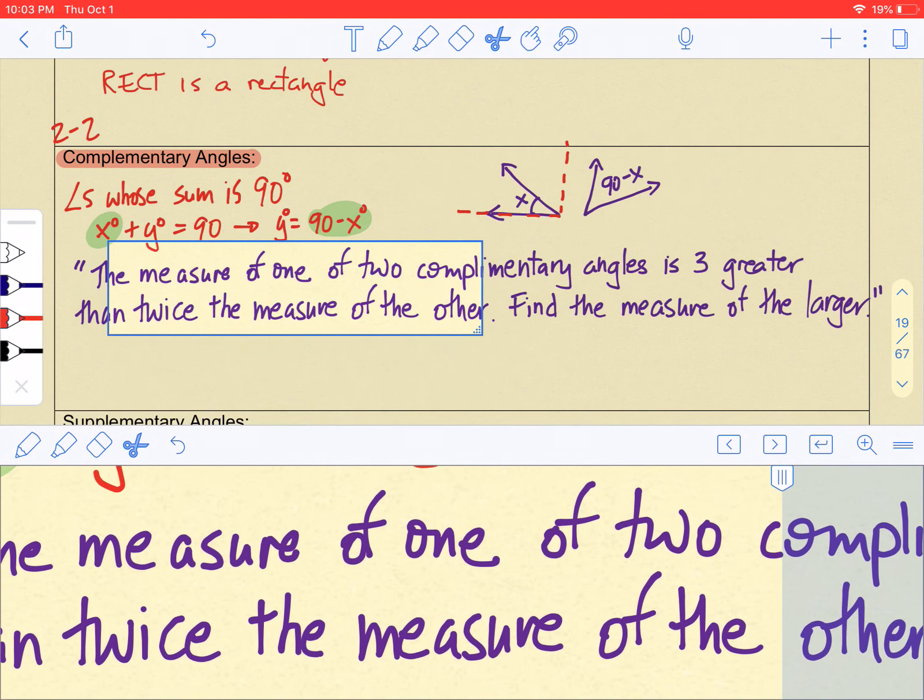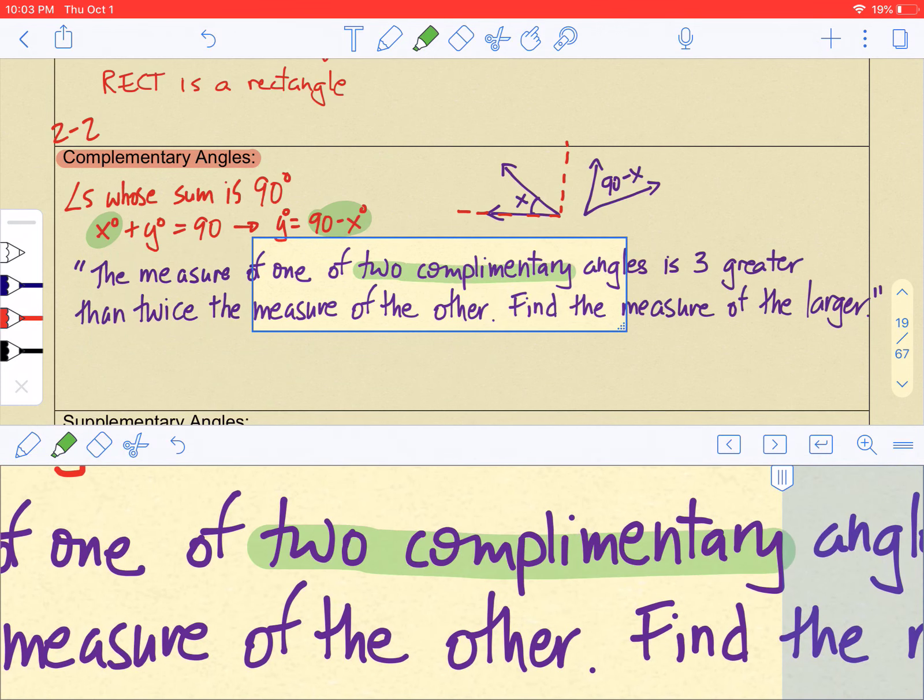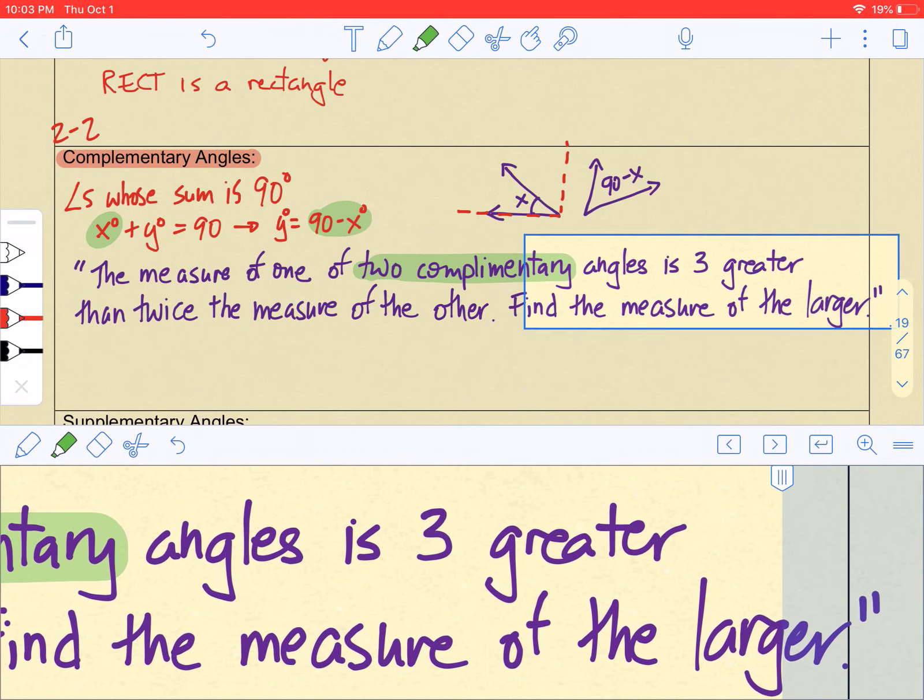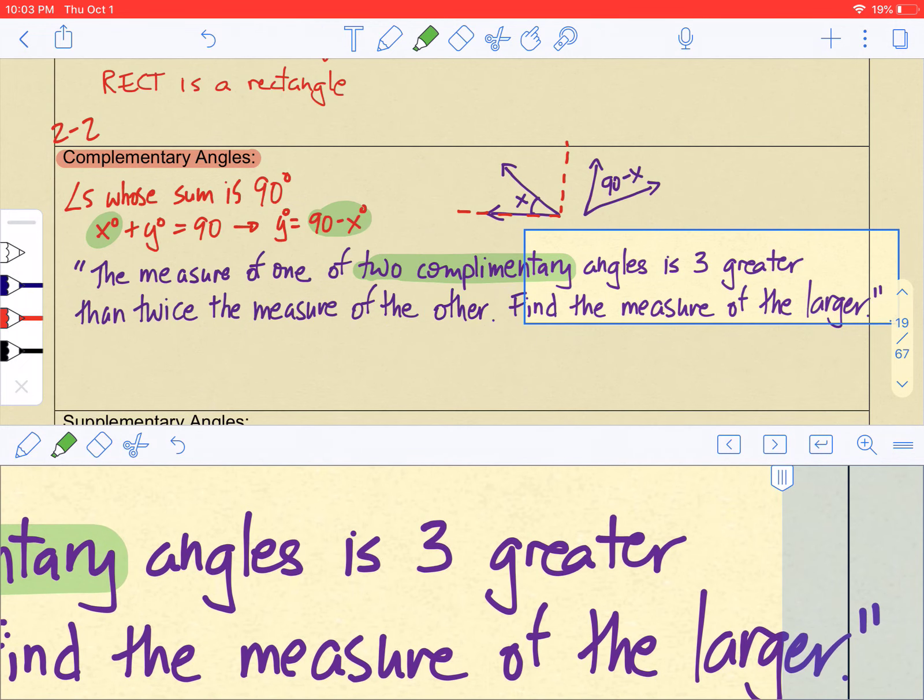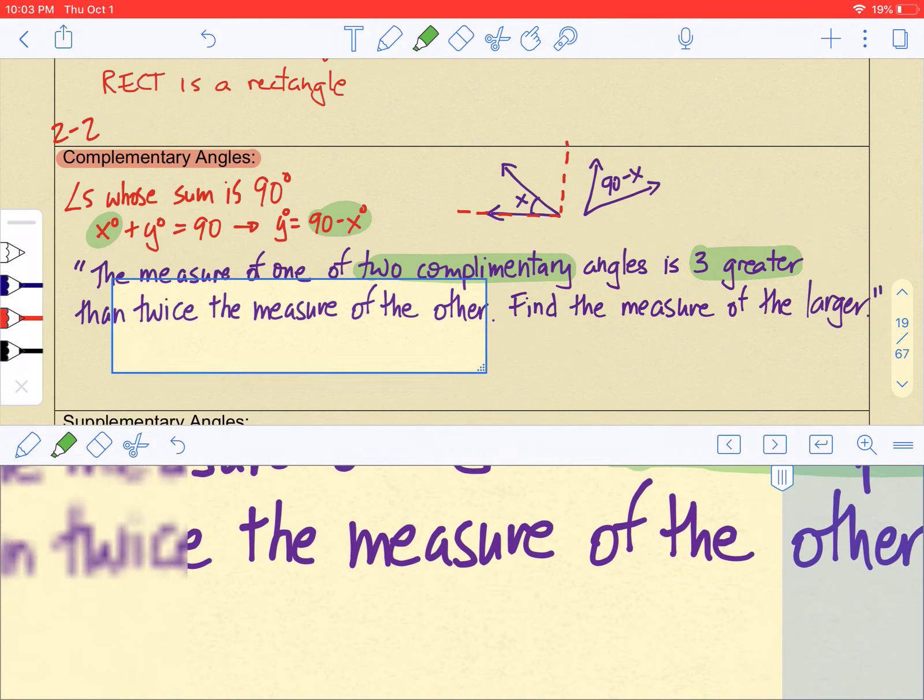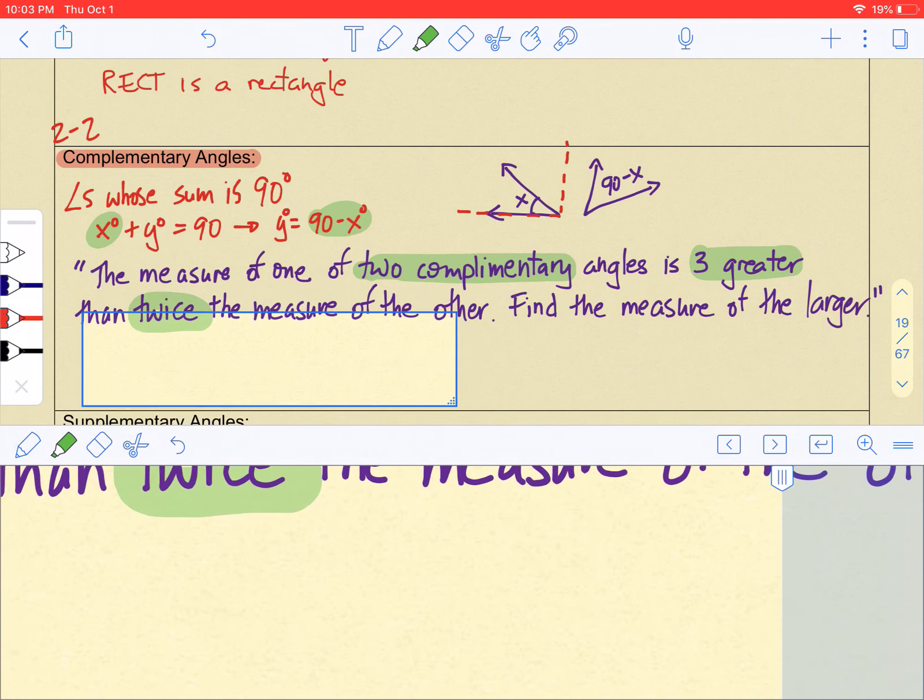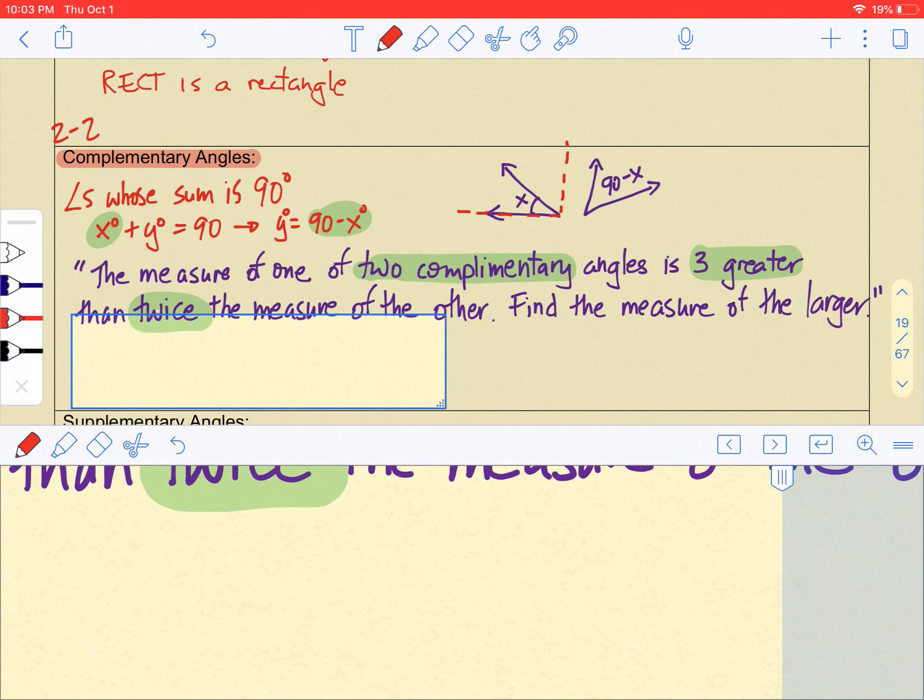So here we have a phrase now. Let's underline the important parts. First of all, it says two complementary angles. The measure of one of the two complementary angles is 3 greater than twice the measure of the other. So I'm going to write out two sides of an equation. And on one side I'm going to have x and the other side I'm going to have 90 minus x.